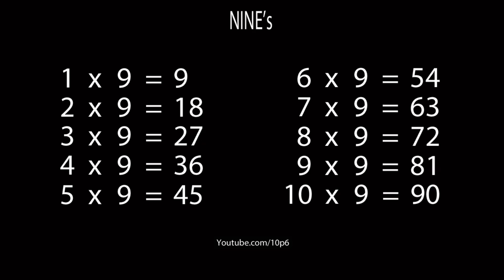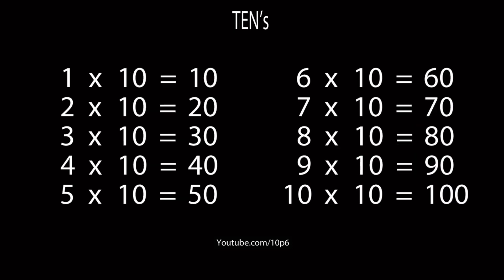9s. 1 9 is 9, 2 9s are 18, 3 9s are 27, 4 9s are 36, 5 9s are 45, 6 9s are 54, 7 9s are 63, 8 9s are 72, 9 9s are 81, and 10 9s are 90.